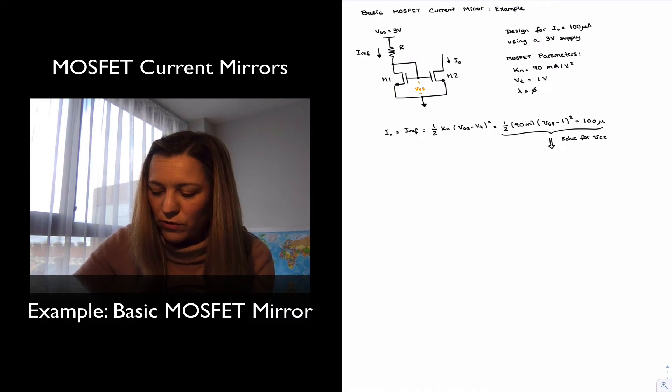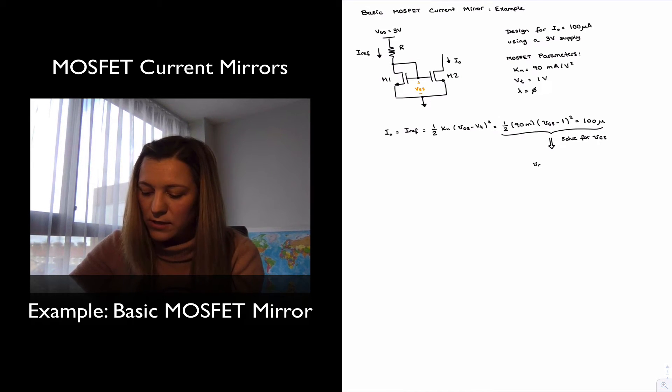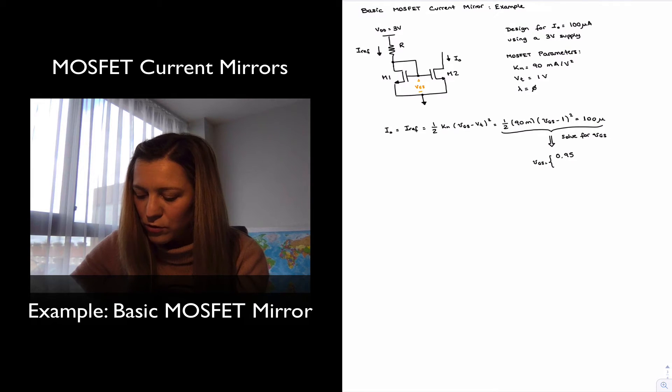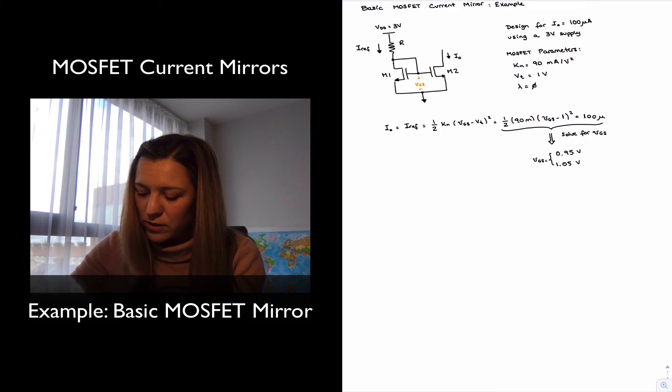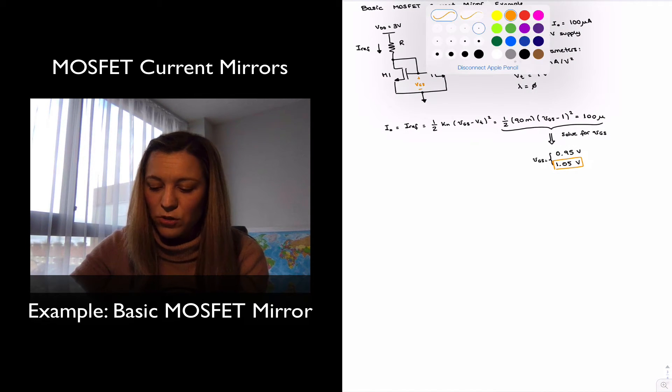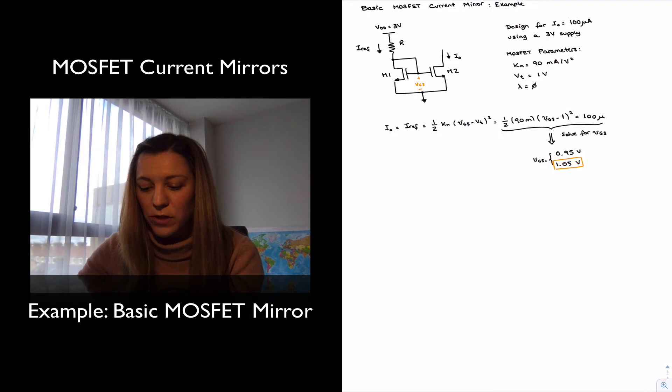I'm going to get two possible values for VGS. VGS is going to be either equal to 0.95 volts or 1.05 volts. The first option is obviously incorrect because it will imply VGS is less than the threshold voltage, which is 1 volt, and it will mean that the transistor is not in saturation. And so this is the right condition, which is consistent with the transistor being in saturation.